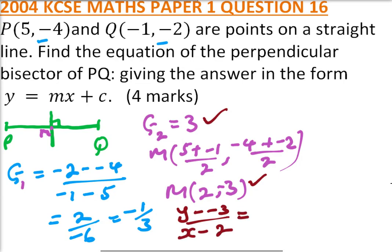So y - (-3) becomes y + 3, and this equals 3(x - 2), which gives us 3x - 6. Cross-multiplying, y + 3 = 3x - 6.